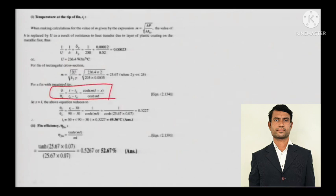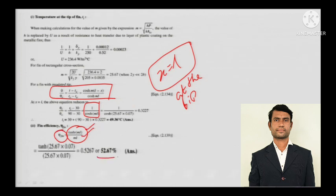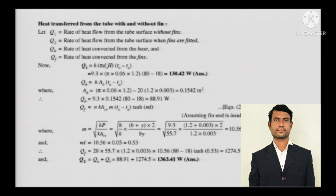At x = L (the tip), the equation reduces accordingly. Now covering fin efficiency: for the insulated-end case, fin efficiency is given by tanh(mL) / (mL). This gives the efficiency of a fin, which works out to 52.67 percent.